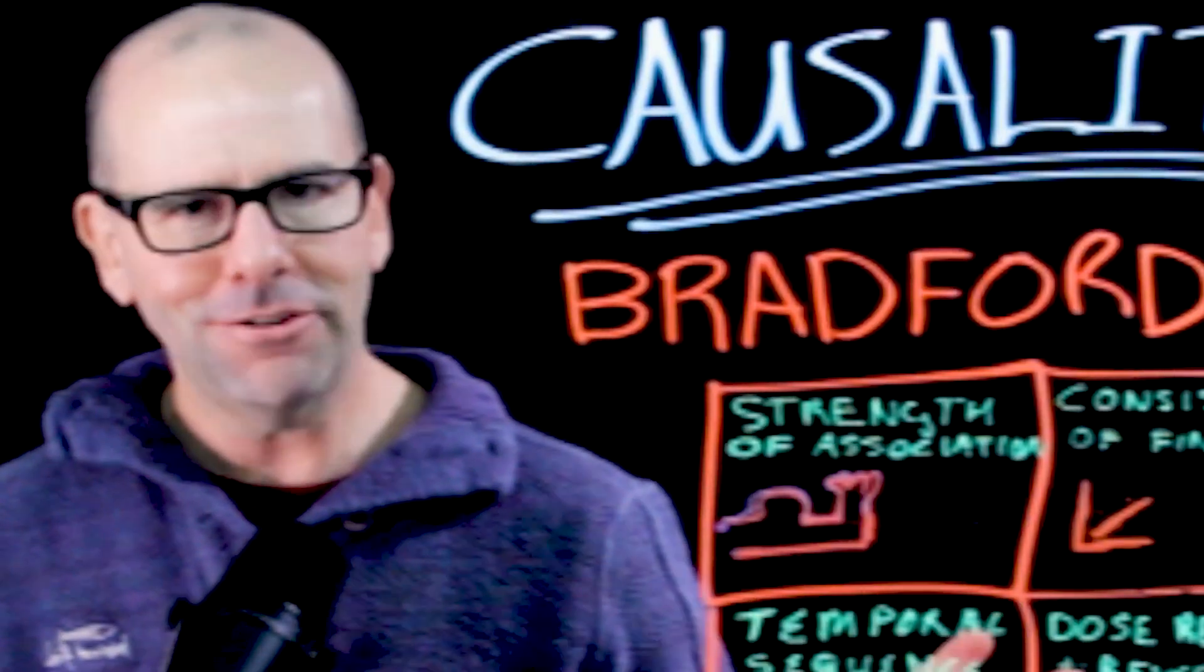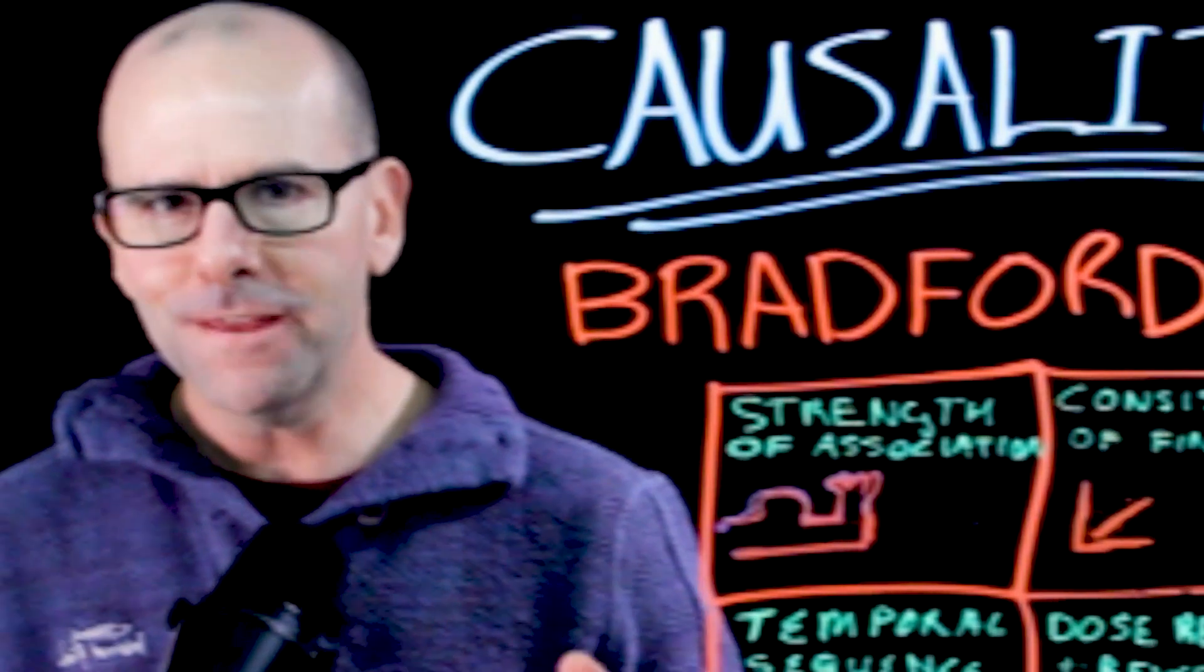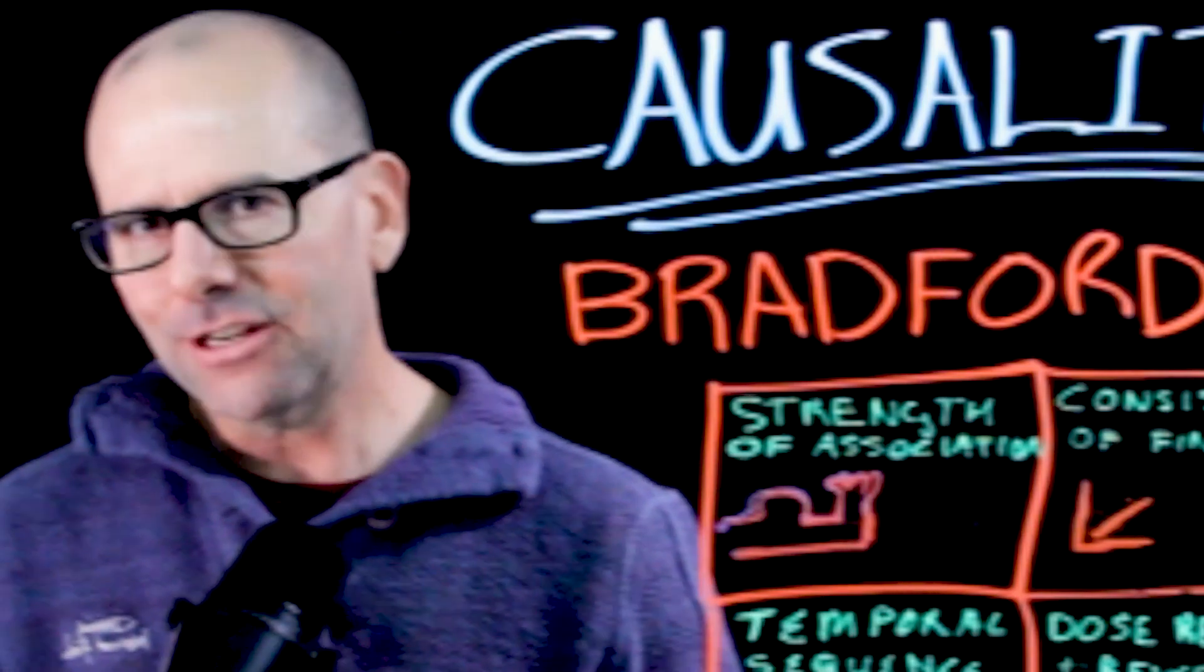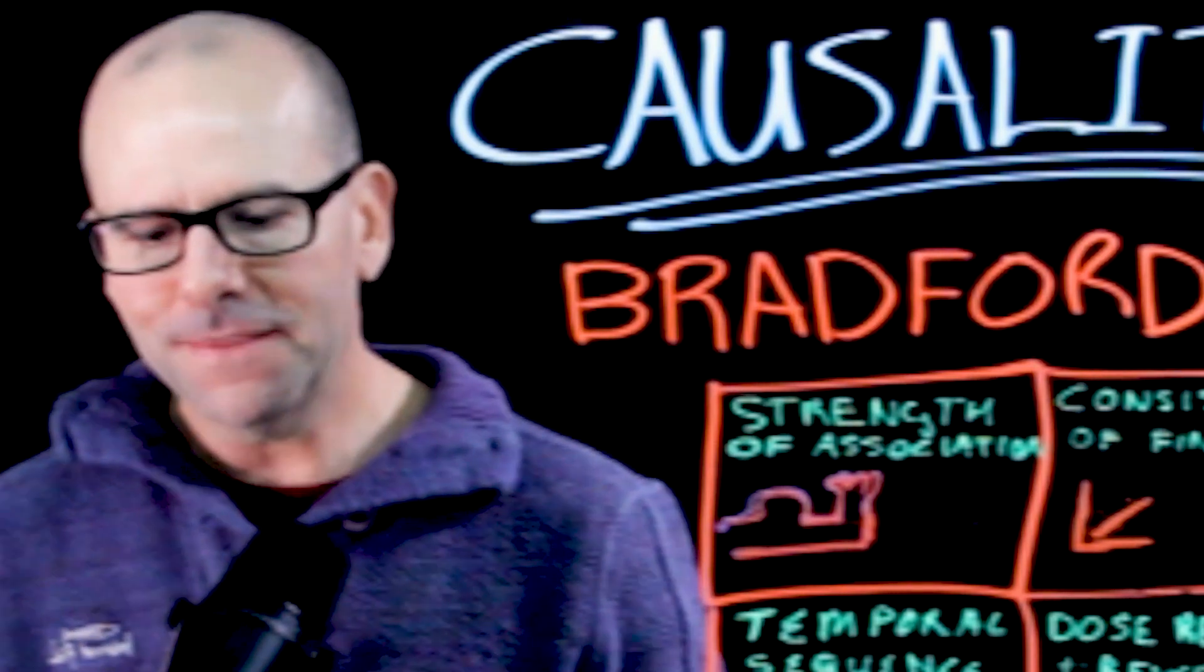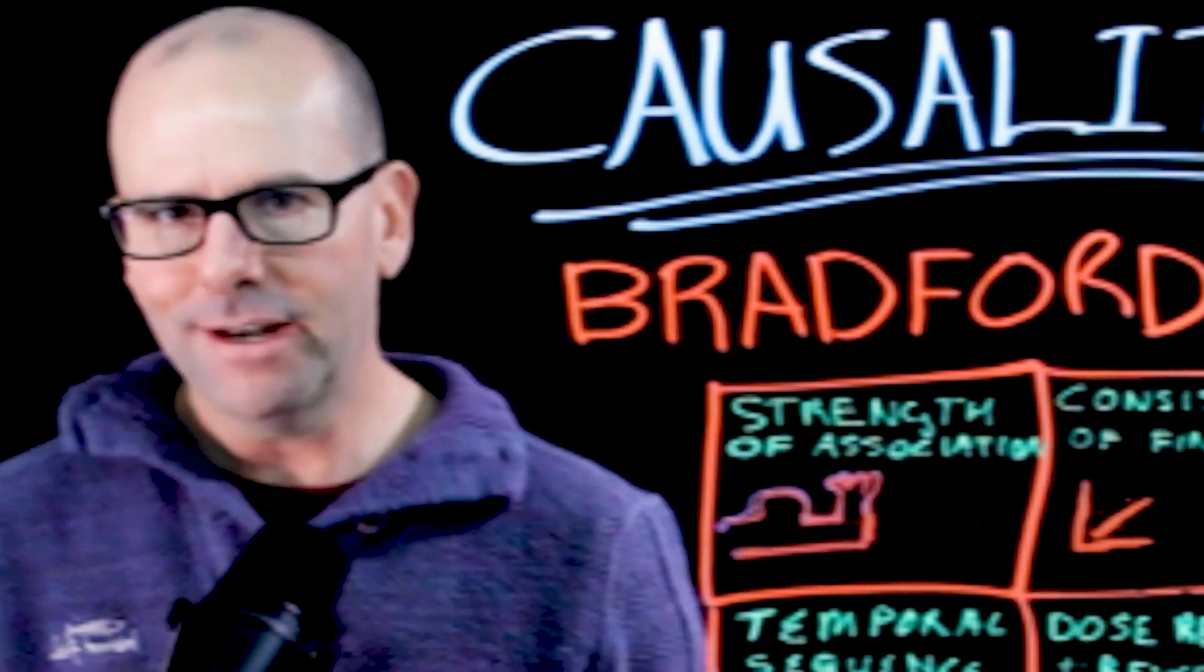Now on the surface, these criteria seem to make sense, right? You would think that if you met these criteria, you would be making a strong argument that this particular exposure is causally related to the outcome of interest. And I'd like to argue that that is not true. And here's why.